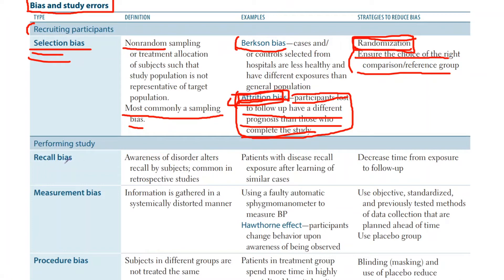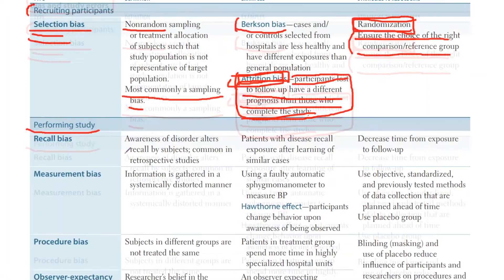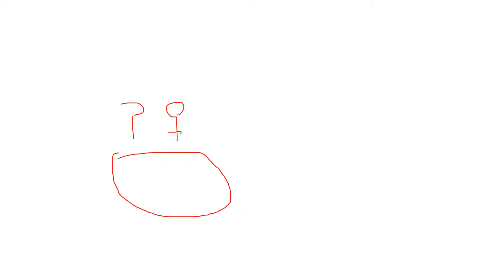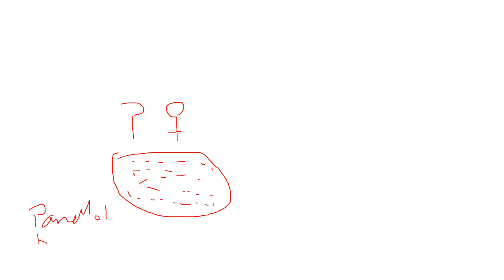The next four biases fall under performing the study. Let's start with the first one: recall bias. The best way to explain recall bias is with a group of pregnant women. Let's say it is already established that Panadol can cause birth defects.